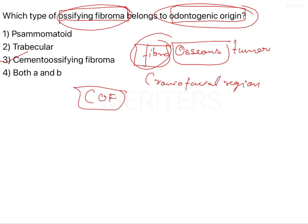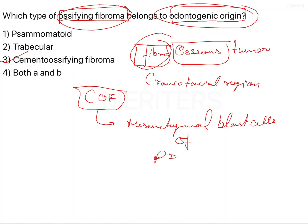Their resemblance to the ossifying fibroma makes it very difficult to differentiate between these, and newer classifications have confirmed that yes, these can be considered similar. They are derived from the mesenchymal blast cells of the periodontal ligament — that is important — and they have a potential to form fibrous tissue.